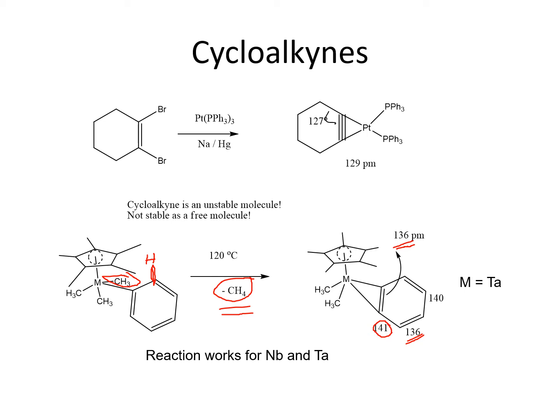Because the tantalum in this complex has two valence electrons, those electrons can be back-donated to the pi star orbital of the benzyne, populating the pi star orbitals of benzyne with the metal's two electrons.